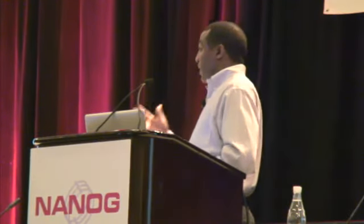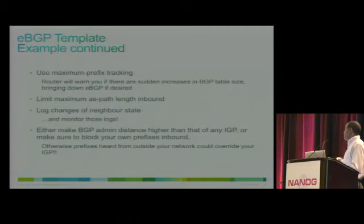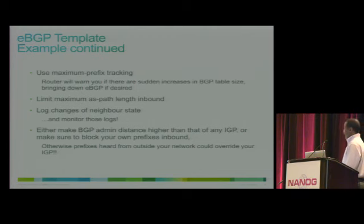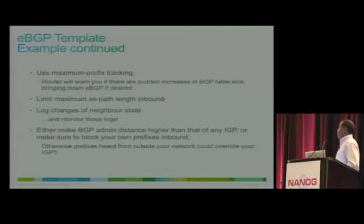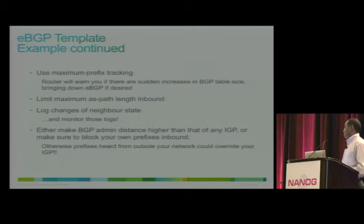You can limit the number of routes received from a peer or the total number of routes received by the router, and set it to generate a warning or reset the session. You can limit the maximum AS path length received. It's also important to log changes of neighbor state — whenever the neighbor goes up and down, a syslog will be generated, which helps in troubleshooting any potential problem.